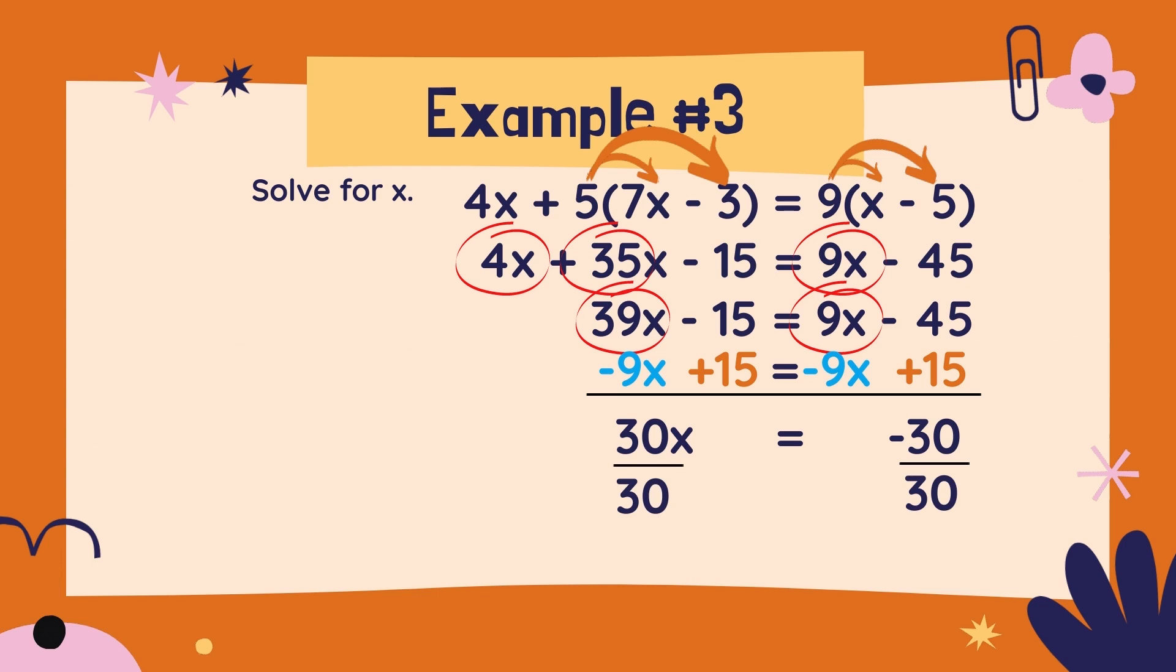The next step is to completely isolate that x and get it all by itself. Right now it's being multiplied by 30, so we need to divide it by 30. And whatever we do to one side of the equation, we do to the other side as well. So divide both sides by 30. On the left, that gives us 1x, or just x. And on the right, that gives us negative 30 divided by positive 30, which is negative 1.